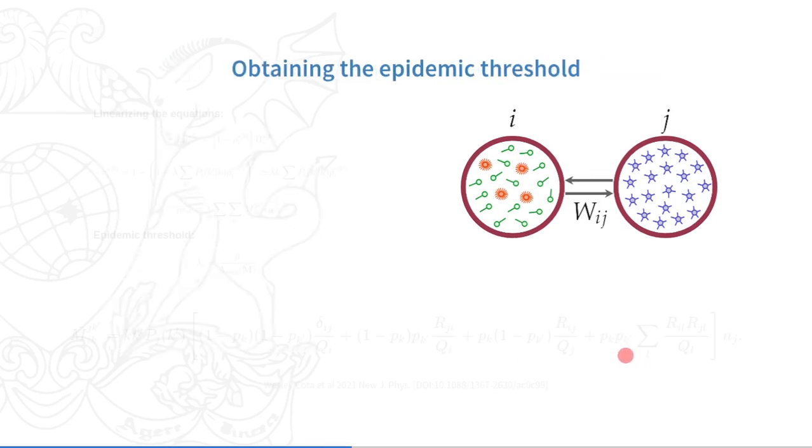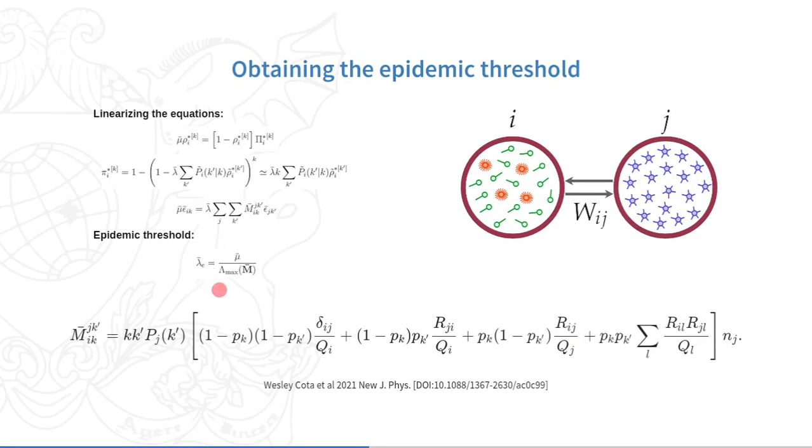The epidemic threshold lambda_c will depend on the largest value of a supra-matrix M, which has all information about the demography, social patterns, and recurrent mobility, and each term represents the interactions of residents and visitors.